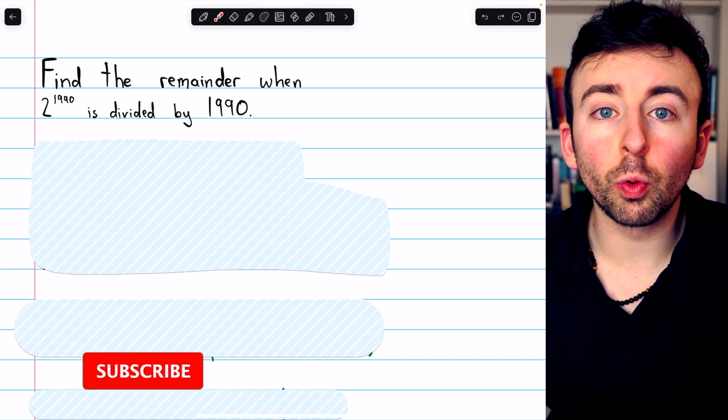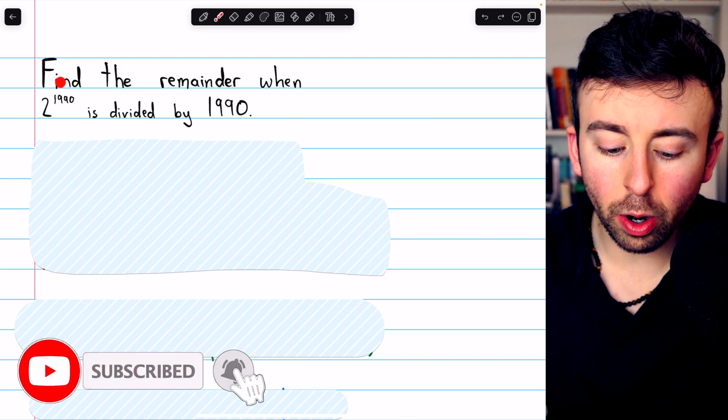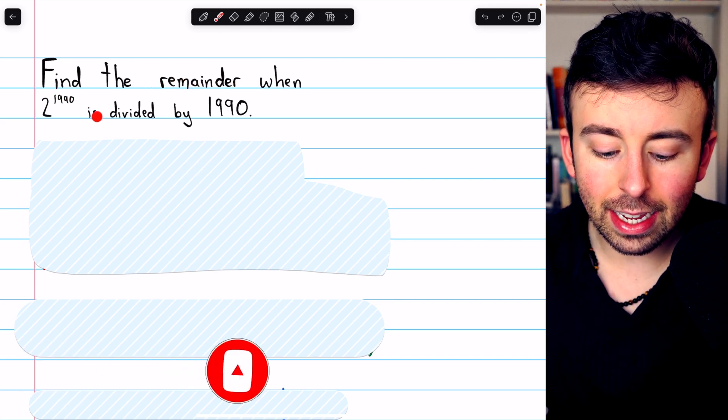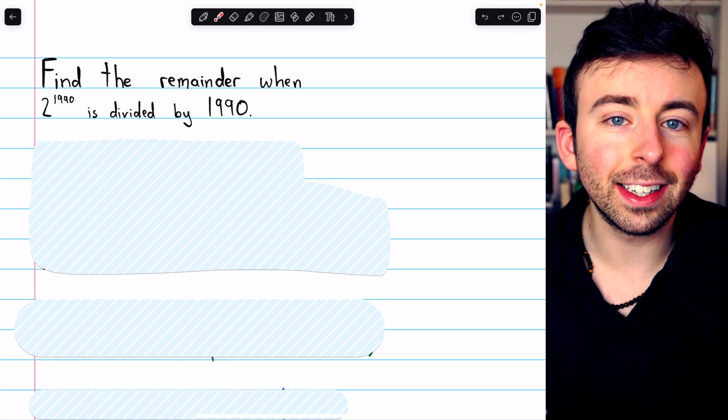Let's solve this problem from India's Regional Math Olympiad. We're asked to find the remainder when 2 to the 1990 is divided by 1990.